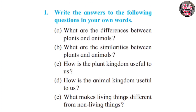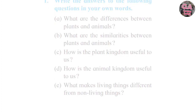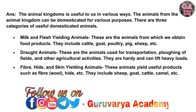D. How is the animal kingdom useful to us? The animal kingdom is useful to us in various ways. Animals can be domesticated for various purposes. There are three categories of useful domesticated animals. First, milk and flesh-yielding animals — these are animals from which we obtain food products, including cattle, goat, poultry, pig, sheep, etc.